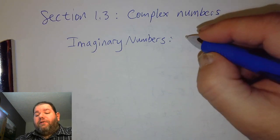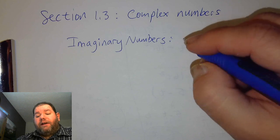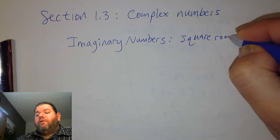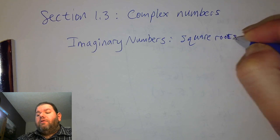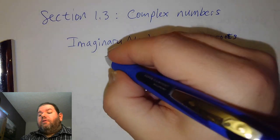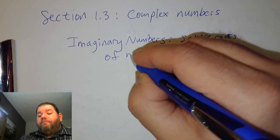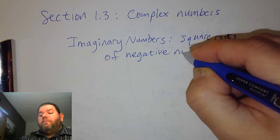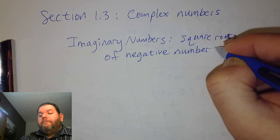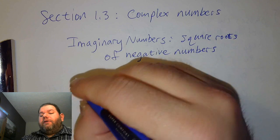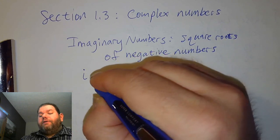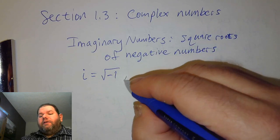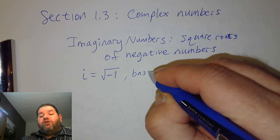Imaginary numbers are established as square roots of negative values. We assign the value of i as being equal to the square root of negative 1 — this is our basic imaginary unit.